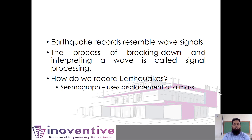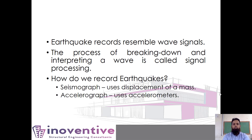Early recording instruments are called seismographs. They use displacement of a mass — a rotating drum with paper on it, and a pen suspended onto that paper with a weight and a spring. When the earthquake shakes, the pen starts to move and records the reading. Today, most ground motions are recorded using an accelerograph, which uses accelerometers like the ones in our smartphones. Many people, myself included, tend to say seismograph, but what we really mean is accelerograph.